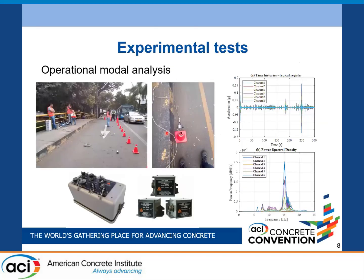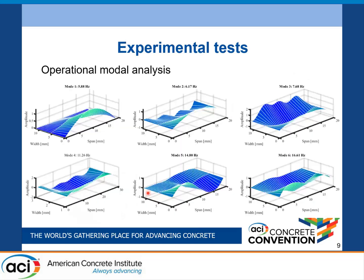Moving to the experimental test, this consisted of two types: an operational modal analysis to identify the frequencies, and pre-static diagnostic load tests. In the dynamic test, seismic accelerometers were used to record the vibration of the structure and obtain the natural frequencies, mode shapes, and damping ratio. Based on this information, a total of six mode shapes of the structure were obtained. The first frequency of the system is 5.9 Hz with a modal damping of approximately 3%. With this information, we performed a first calibration of the model, which I will show in a later slide.